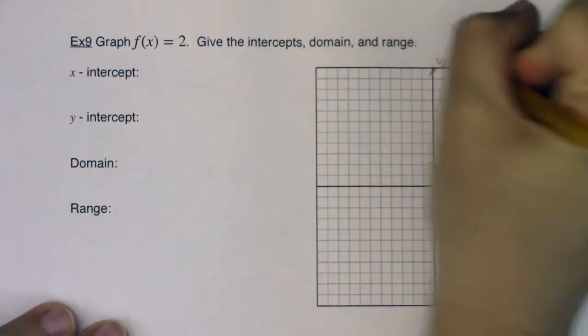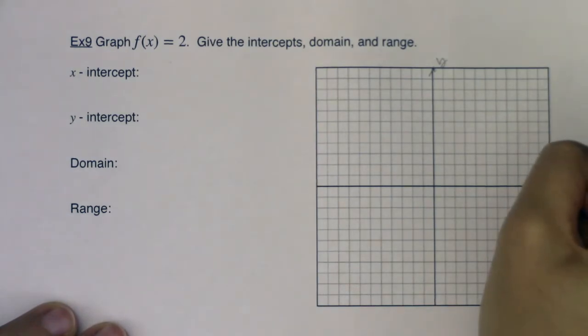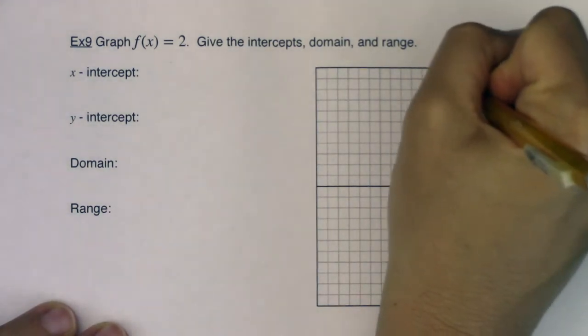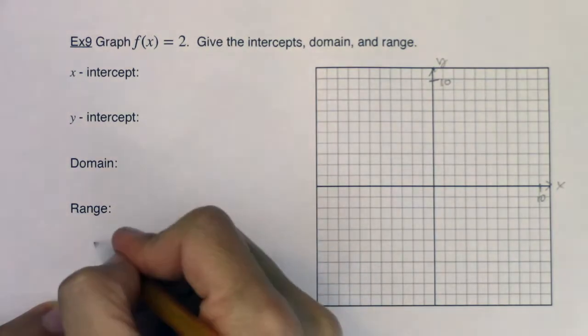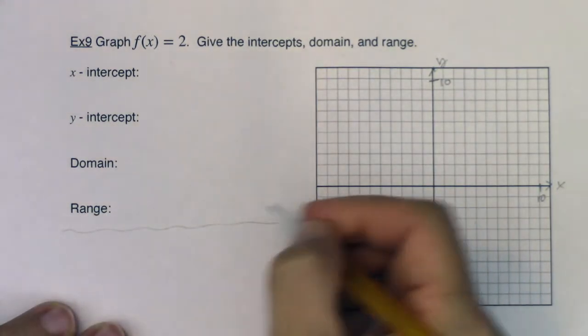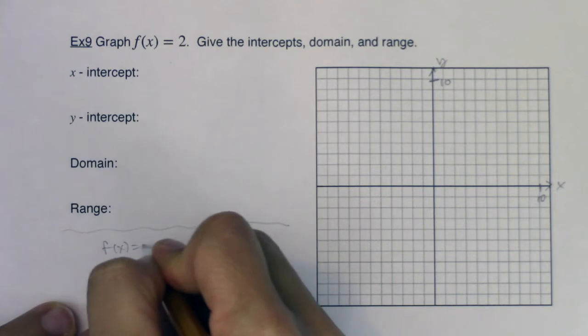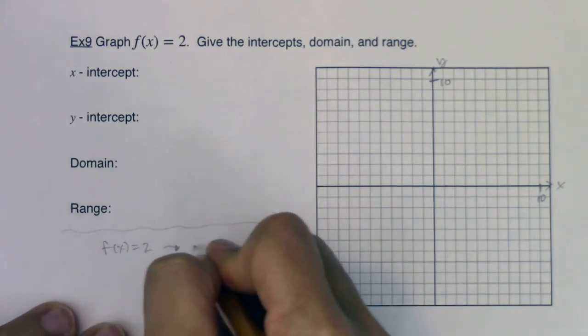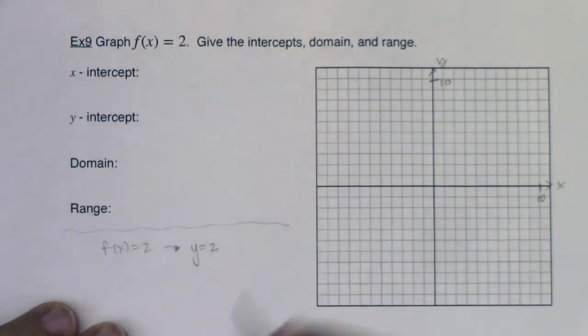I'm going to go ahead, label and scale my axes. I'll go 10 and 10 again. So this is basically, and I'm going to put a little separation here so I can talk about it. When we see f(x) equaling 2, that's like asking you to graph the line y equals 2. So this is going to be a horizontal line.